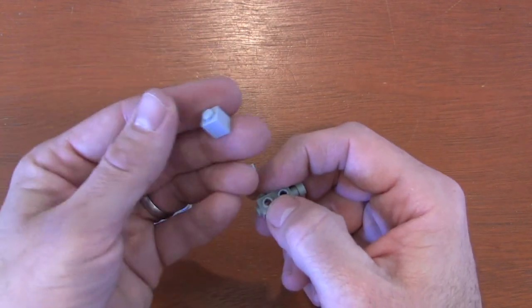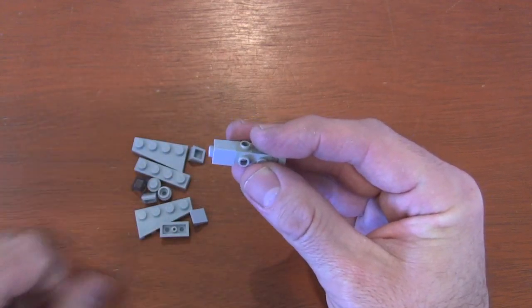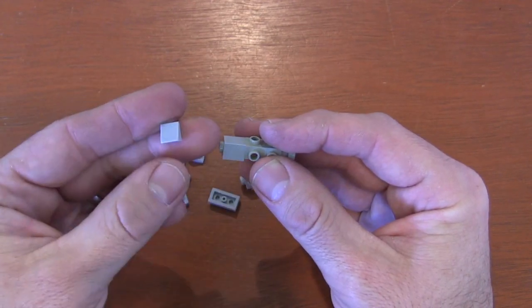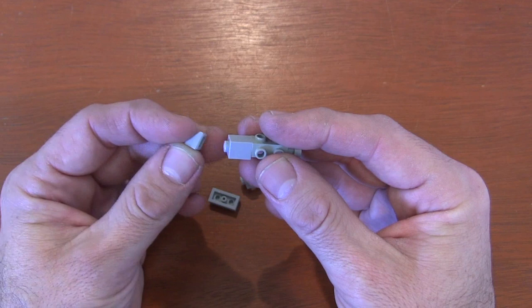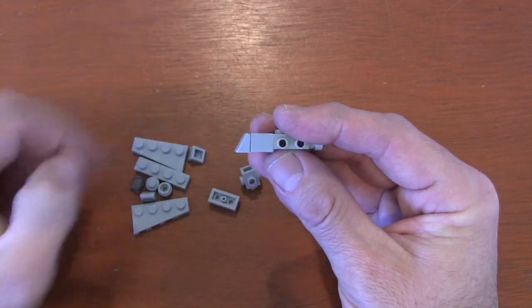Get a 1x1 brick and put it in front. On top of that brick, get a cheese wedge slope with the small end on top going down to the big end at the bottom.